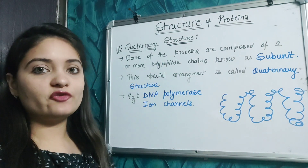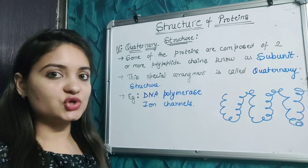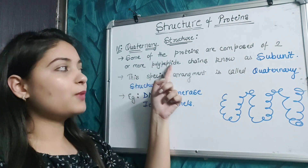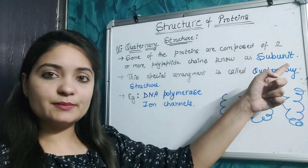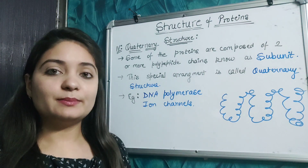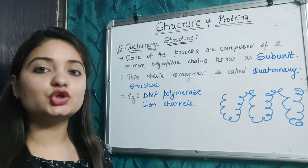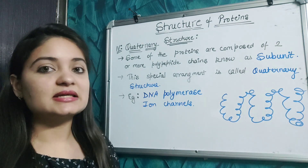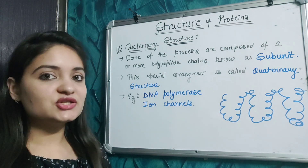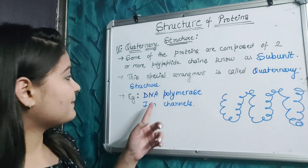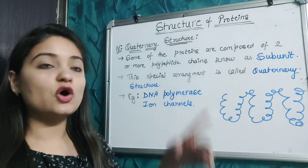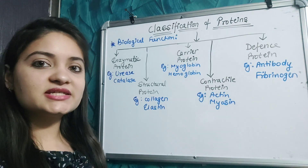The quaternary structure of protein: when proteins are composed of two or more polypeptide chains, they are referred to as subunits. This special arrangement is called the quaternary structure. Examples of proteins with quaternary structure are DNA polymerase and ion channels.